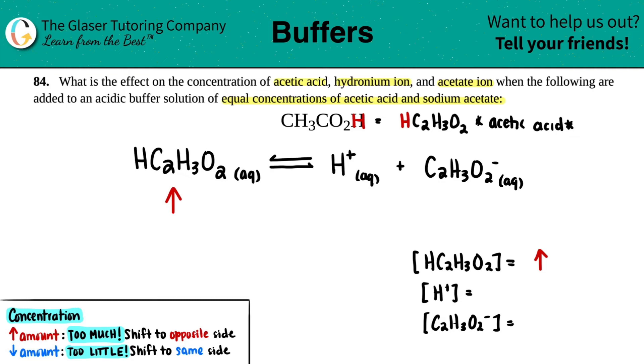This goes back to Le Chatelier's principle. Remember, if you increase anywhere on your equation, you have too much of it, so you have to shift to the opposite side to get a lower amount. In this case, the direction that predominates is opposite of where the increase is. Since the increase is on the reactant side, you will shift to the product side.